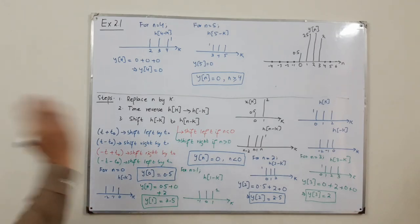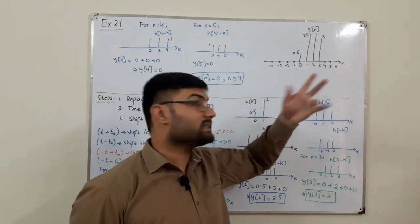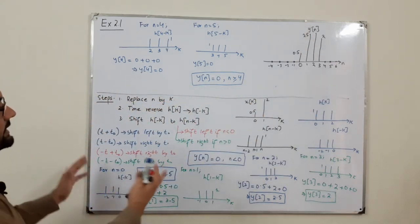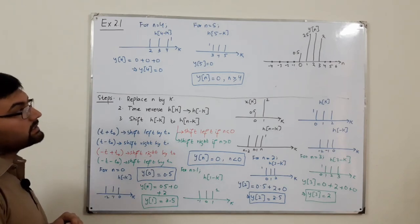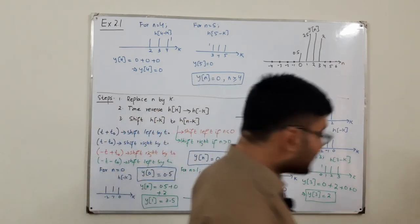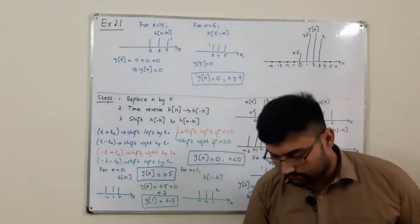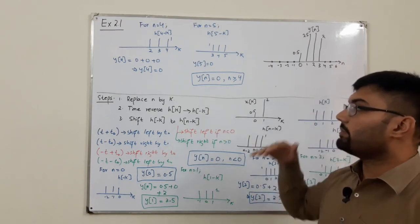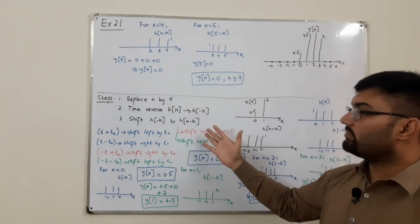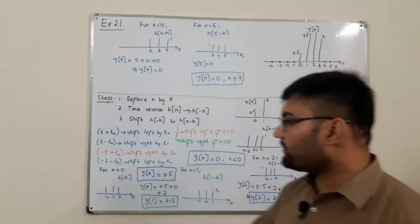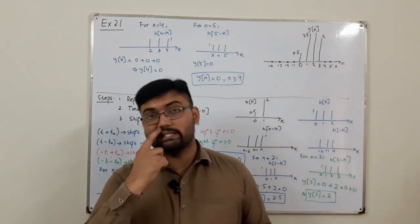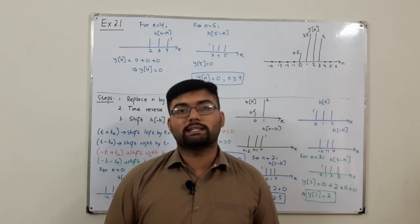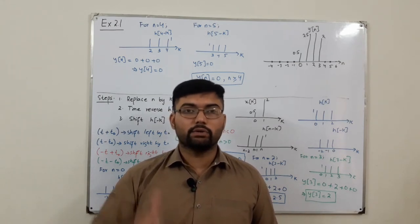The previous method drawn with red color gave the same answer, confirming both approaches are equivalent. The basic method is the formal convolution. To summarize the steps: replace n by k, time reverse, shift, then multiply. Shifting the impulse is the fundamental operation. That is all about this lecture. See you in the next lecture with more examples. Take care of yourselves and everyone around you. Goodbye.